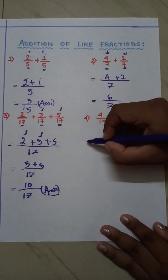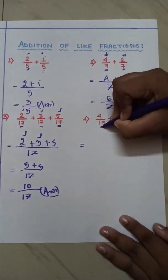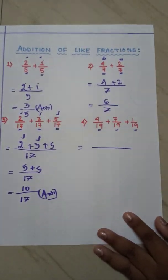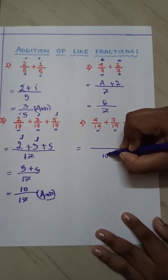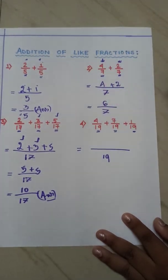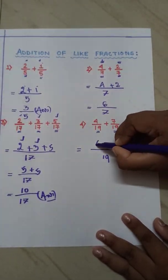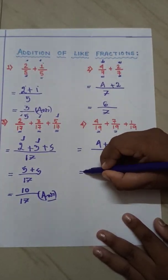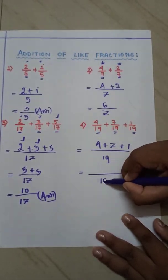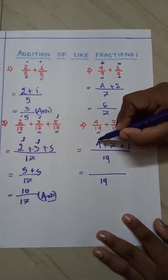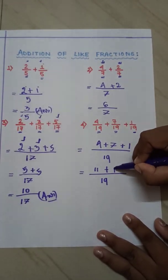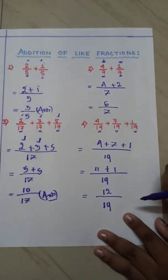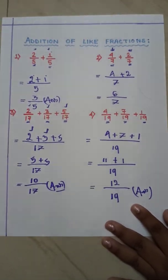Now the next one. Here all the denominators are 19, 19, 19. We draw a big line, write 19, and then the numerator portions: 4 plus 7 plus 1. We write the denominator 19, then 7 plus 4 is 11, plus 1. And 11 plus 1 is 12. So our answer is 12 by 19.